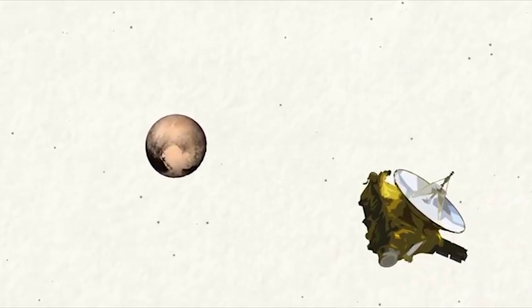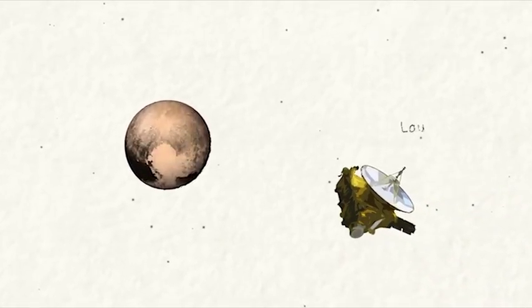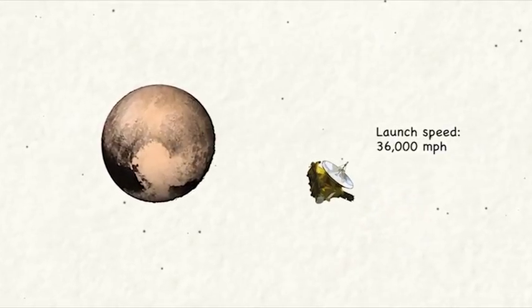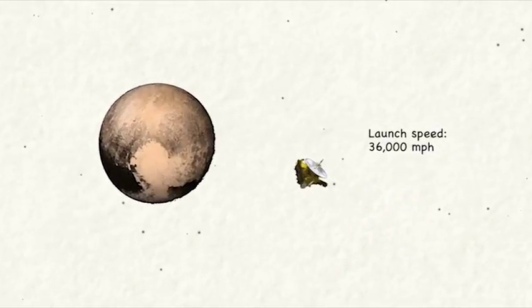New Horizons, which NASA sent rushing out to Pluto, managed 36,000 miles per hour, or a little more than half what it would have to do to hit the Sun instead.